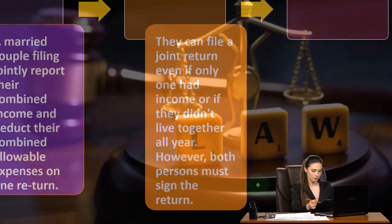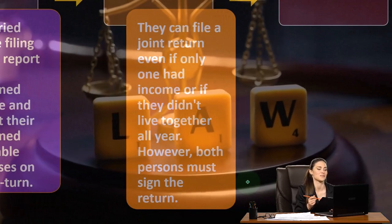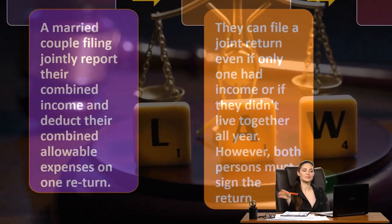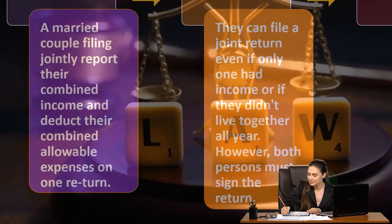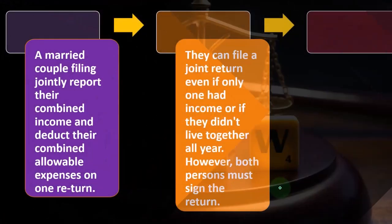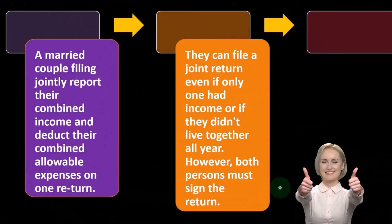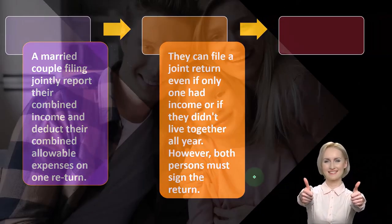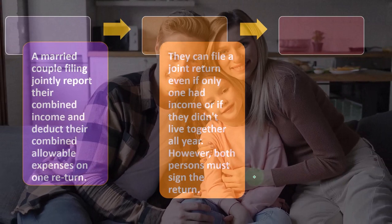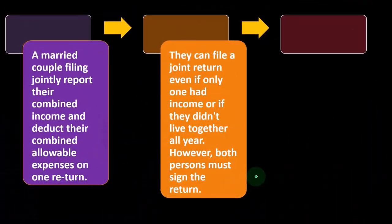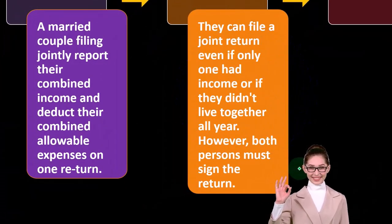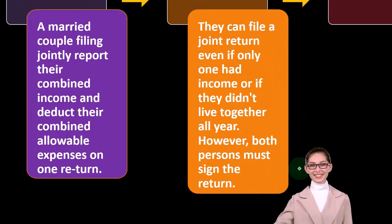You can file a joint return even if only one spouse had income or if they didn't live together all year; however, both persons must sign the return. It used to be much more common to have a one-income household where the other spouse was raising the children. In that scenario it was a little easier to predict what would happen from a tax standpoint, especially with a stable job and a one-income household.